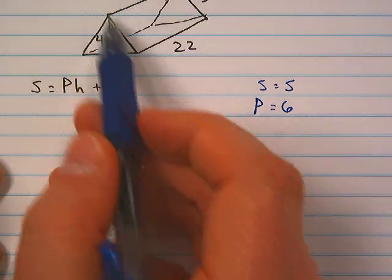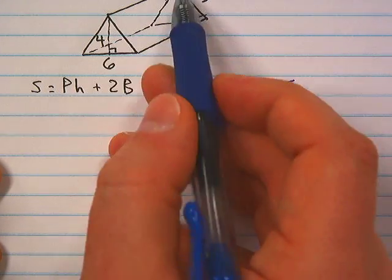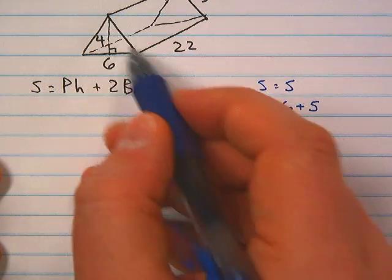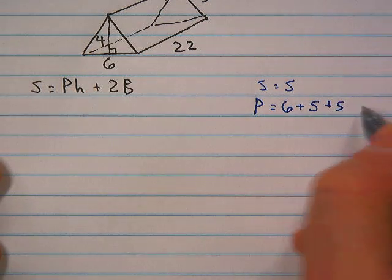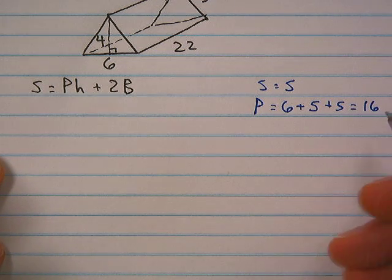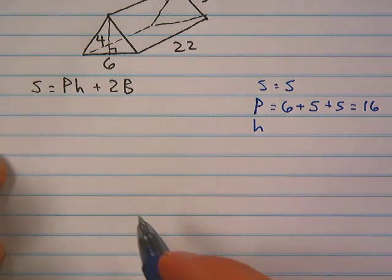So if you look at the base we can see that one side of the base is 6 because it's labeled for us. Now this side is not labeled but the bases of the prisms are congruent, so if this side is 5 then this side must also be 5. And going with that logic if this is 5 we're going to assume that that side is 5 as well. So we have 6 plus 5 plus 5. It's a triangle so there's three sides, that makes sense. The perimeter is equal to 16.